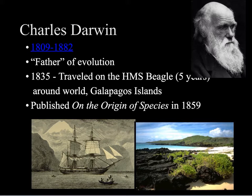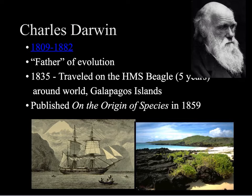We can't discuss evolution and natural selection without talking about the great Charles Darwin. This picture shows him later in life, but when he was a young man in 1835, he traveled on the British ship the HMS Beagle. He was the ship's naturalist, on board for five years, and they traveled around a good part of the Earth. He found the most inspiration from the Galapagos Islands, which are located off the coast of Ecuador.